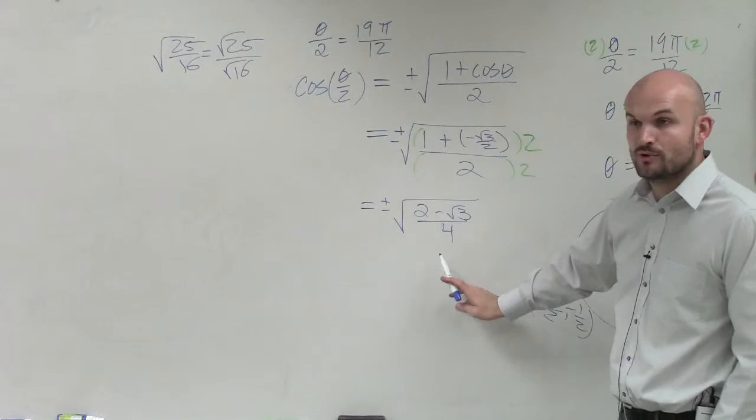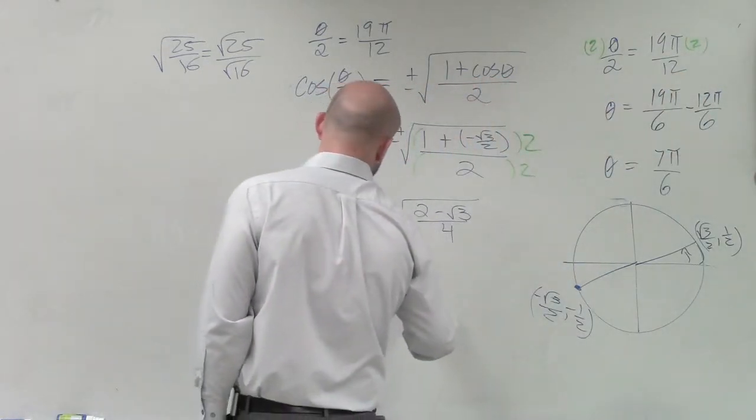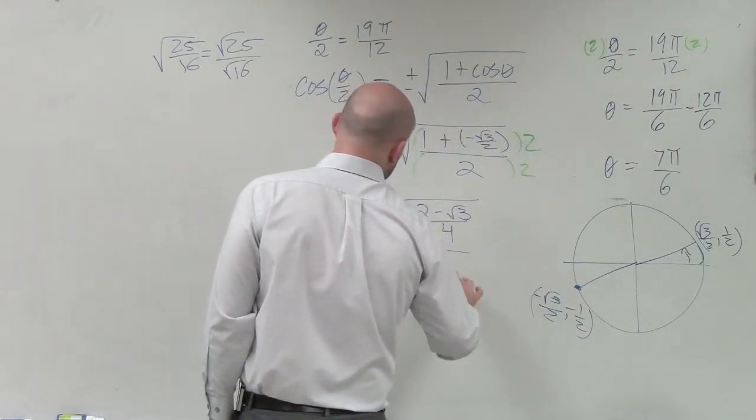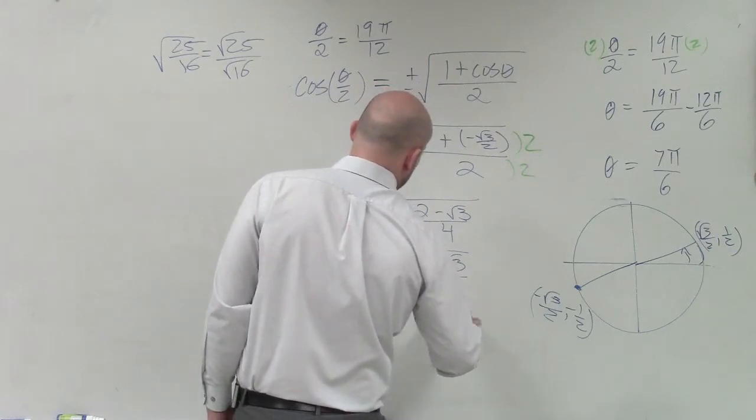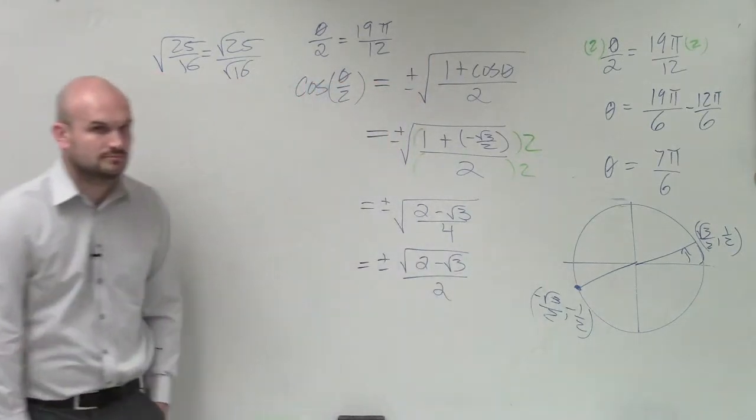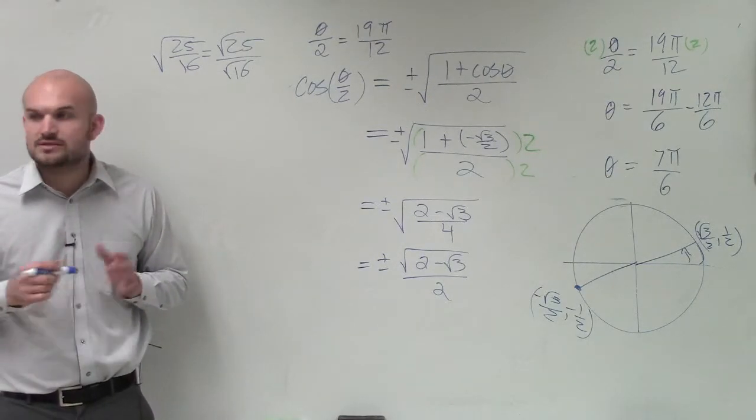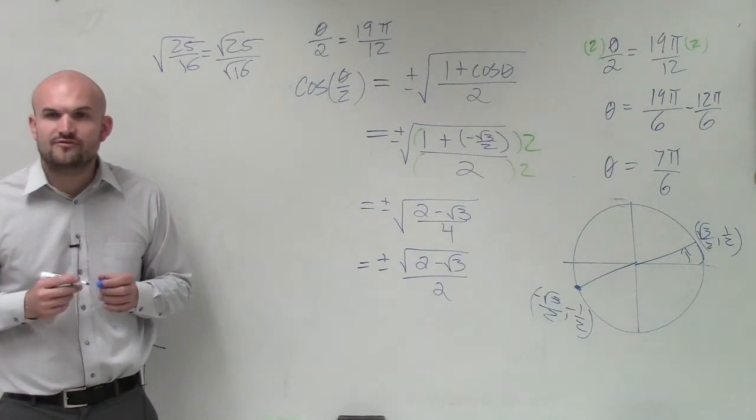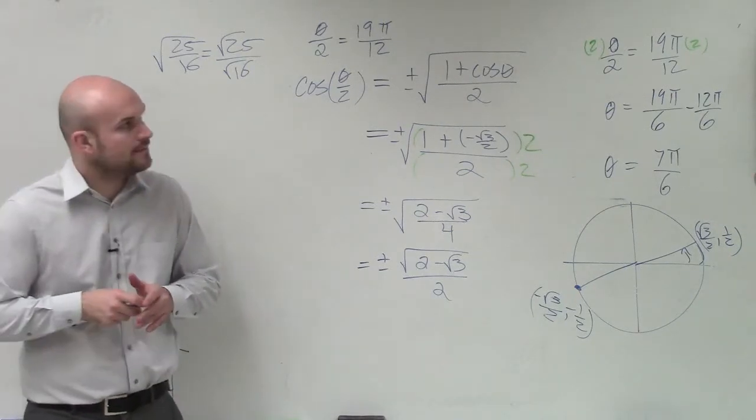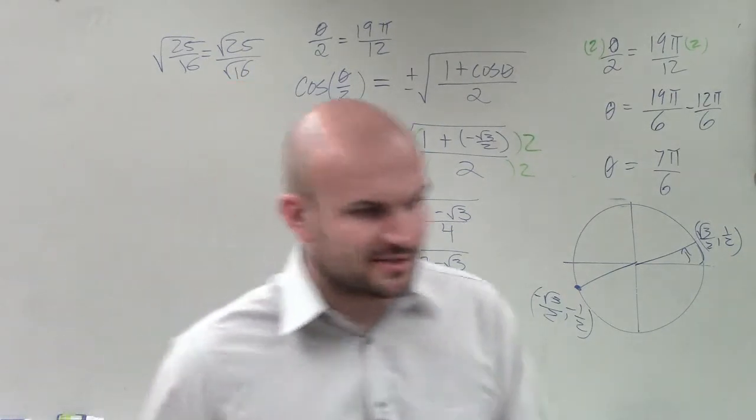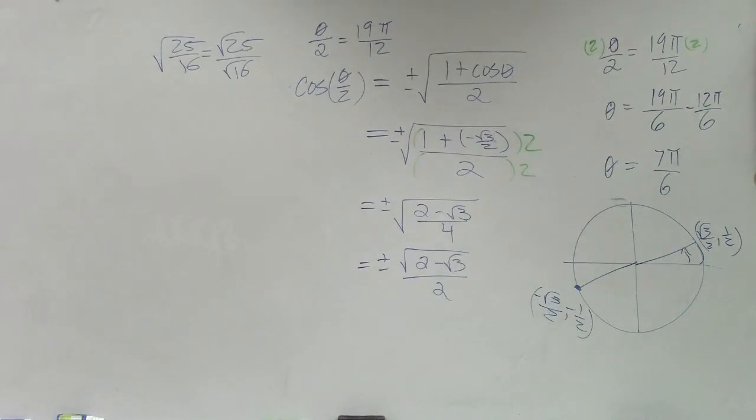So my final answer is going to be (2 minus the square root of 3) over 2, which you could also read as one half times that. Do you have any questions? That's the answer. Make sense? Cool? All right, so you guys want to do a plug and chug? Yay.